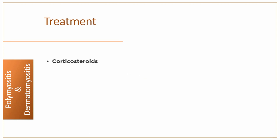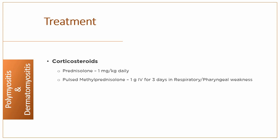Coming on to treatment. Oral glucocorticoids are the mainstay of initial treatment. Start prednisolone at a dose of 1 mg per kg daily. Sometimes high-dose pulsed intravenous methylprednisolone at 1 g per day for 3 days may be required in patients with respiratory or pharyngeal weakness. If there is a good response, glucocorticoids should be reduced by approximately 25% per month to a maintenance dose of 5–7.5 mg per day.